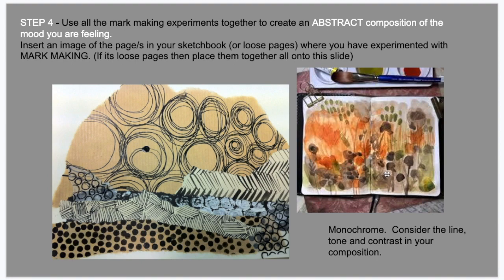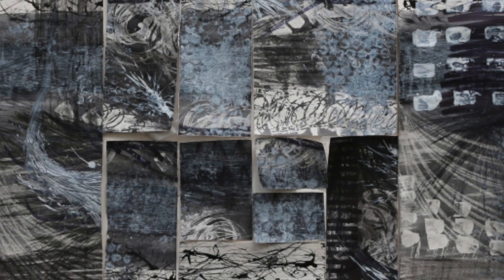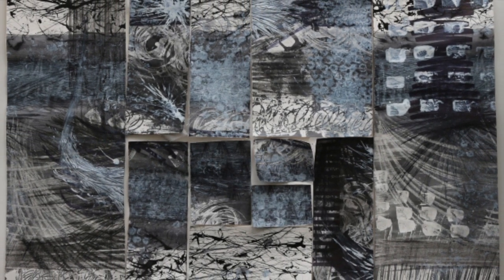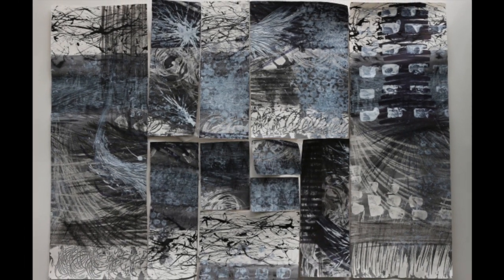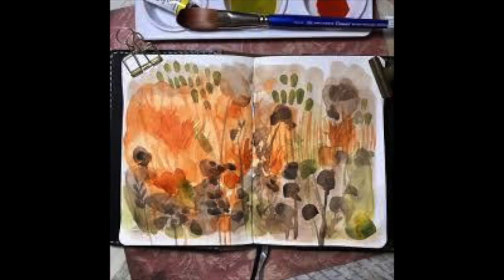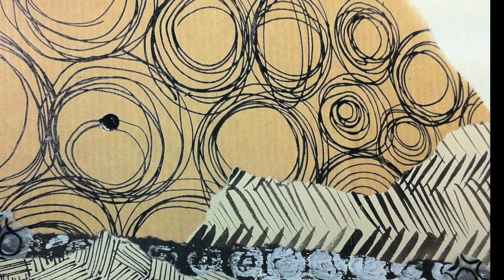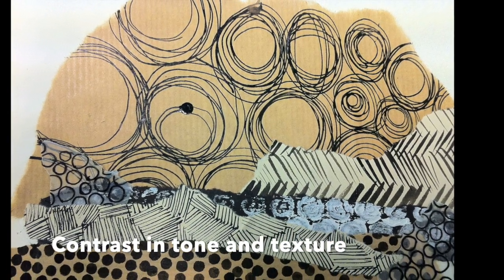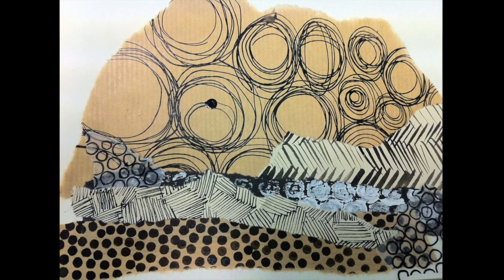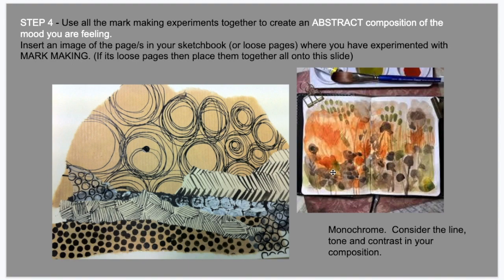For your final composition in step four, please consider line and tone and how you create contrast within your composition. Even though it's abstract, you're still putting something together that creates a mood and feeling that draws your eye into quiet areas. Those big circles have a quiet space within them, and as it becomes more detailed and more busy, it creates a different kind of mood or energy. Consider those aspects of composition.